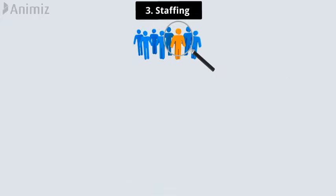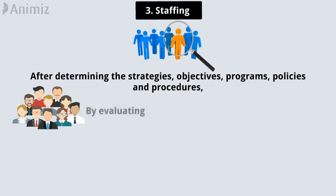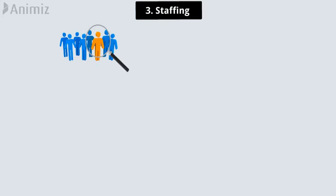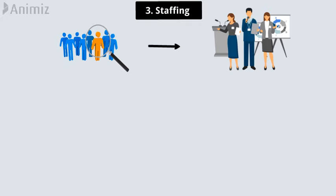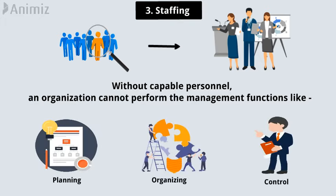Number 3 is Staffing. Staffing is a constant and fundamental step in the management process. After determining the strategies, objectives, programs, policies and procedures, managers select a group of people by evaluating their knowledge and skills to work on that project — this process is called staffing. Staffing is the key to the efficient performance of other functions of management. Without capable personnel, an organization cannot perform the management functions like planning, organizing, control, etc.